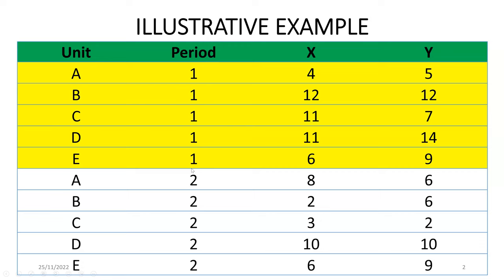For example, DMU A — a decision-making unit A — in period one is using four inputs to produce nine outputs.